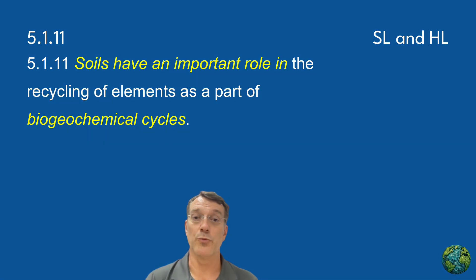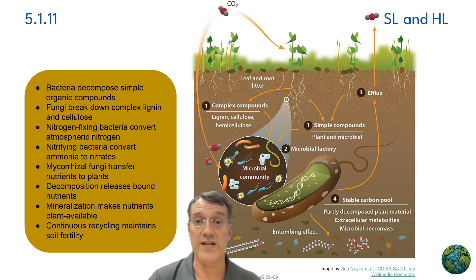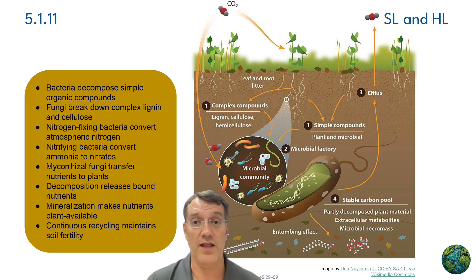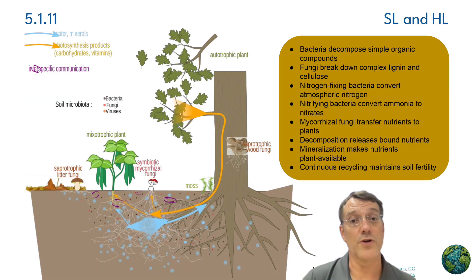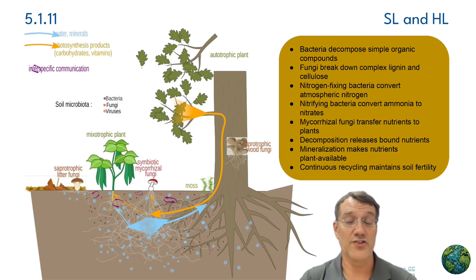Soils have an important role in the recycling of elements as part of biogeochemical cycles. Bacteria decompose simple organic compounds while fungi break down complex lignin and cellulose. Nitrogen-fixing bacteria convert atmospheric nitrogen, and nitrifying bacteria convert ammonia to nitrates. Mycorrhizal fungi transfer nutrients to plants, while decomposition releases bound nutrients. Mineralization makes nutrients available to plants, and continuous recycling maintains soil fertility. The complex web of interactions between soil bacteria, fungi, and plant roots creates a sophisticated system for nutrient exchange and communication that supports entire ecosystems.